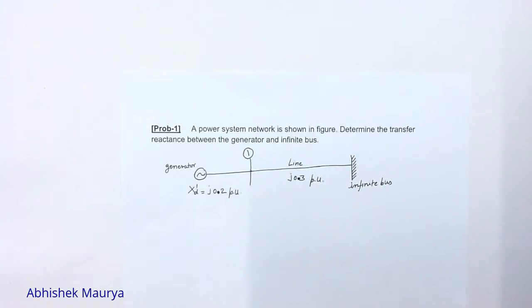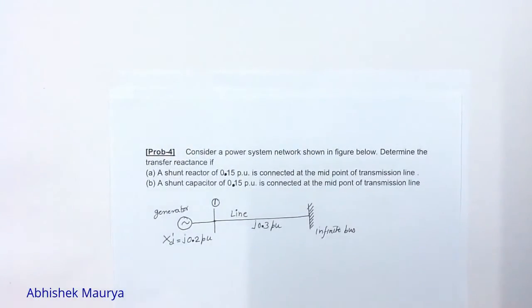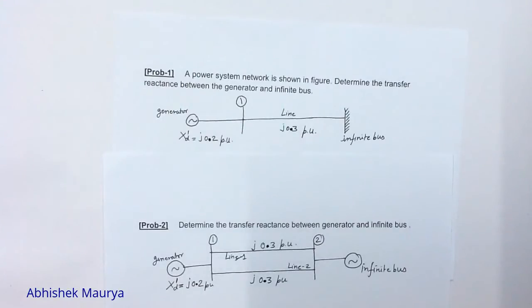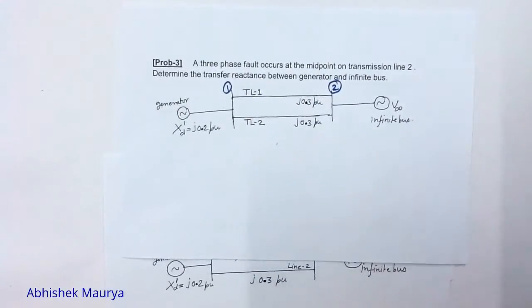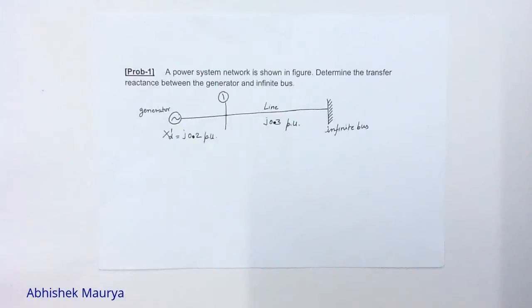In this video we are going to solve four problems related to power system stability analysis. In all four problems we will find out the transfer reactance between the generator and infinite bus. Problem number one and problem number two are very easy. You may feel some difficulty in problem number three and problem number four.